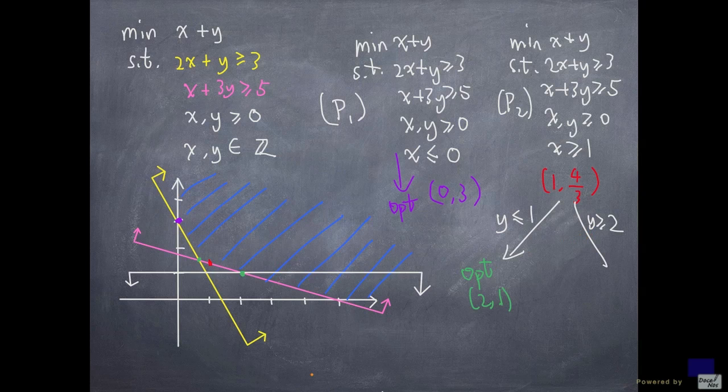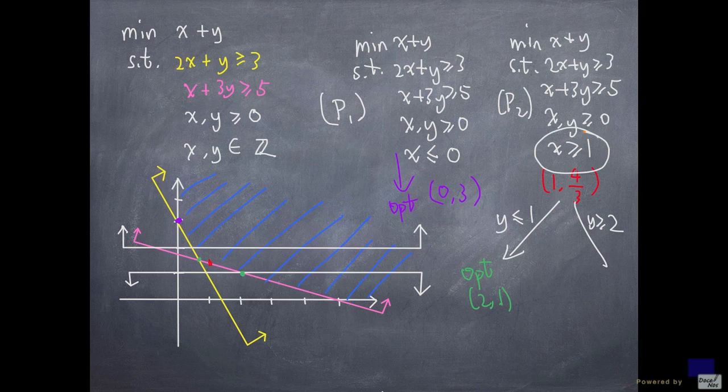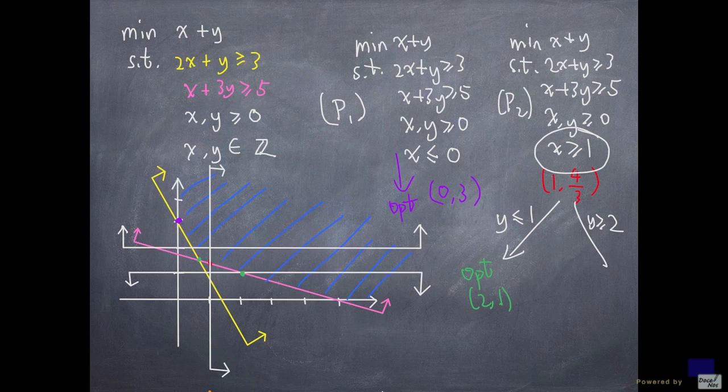Whereas y greater than or equal to 2 is this constraint here. And since we need x greater than or equal to 1, we'll have this constraint as well. And it's clear that an optimal solution for that problem is right here. And that point is 1 comma 2.